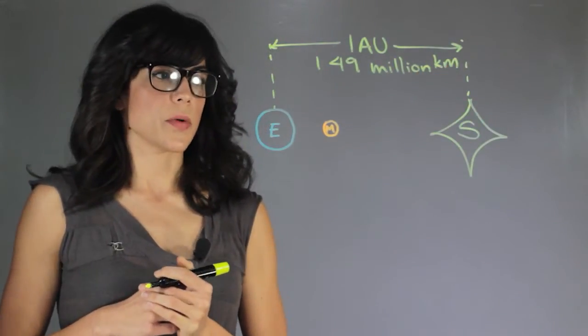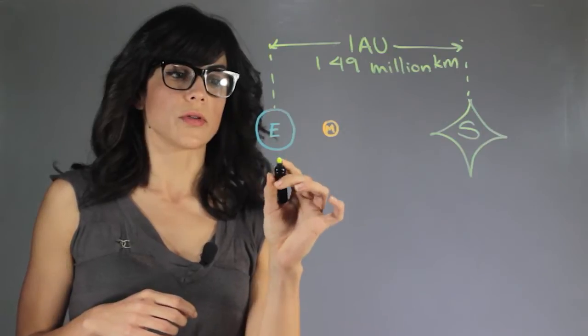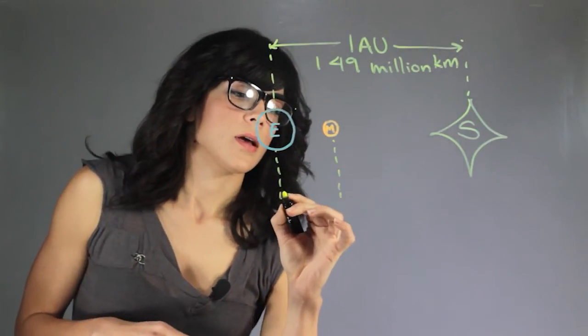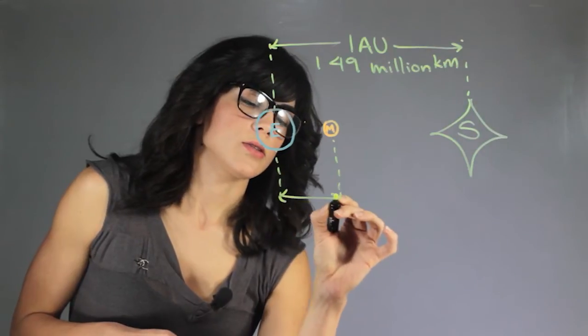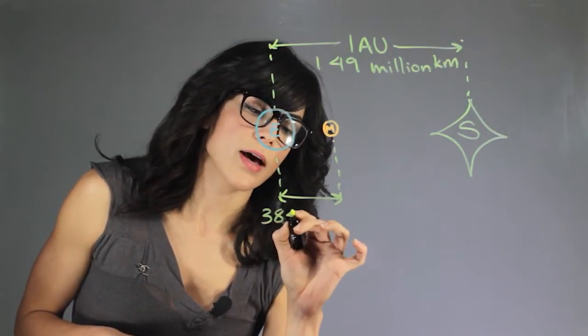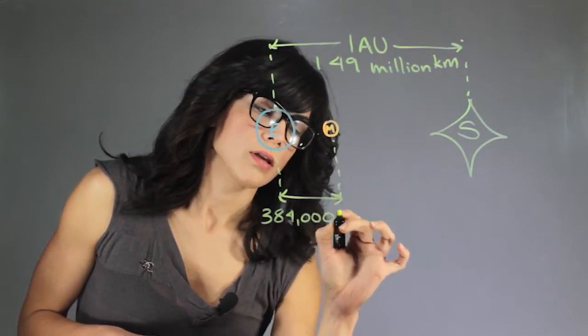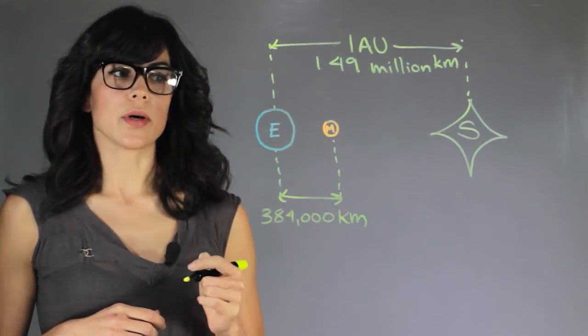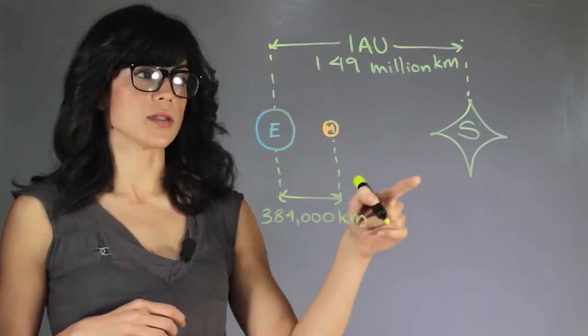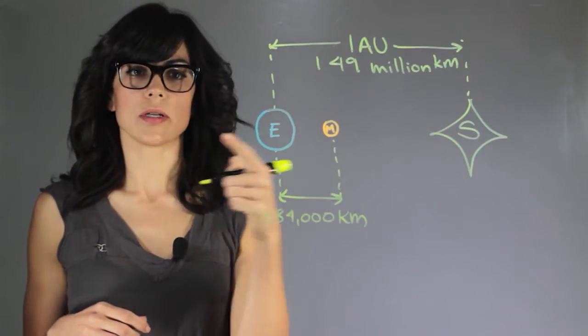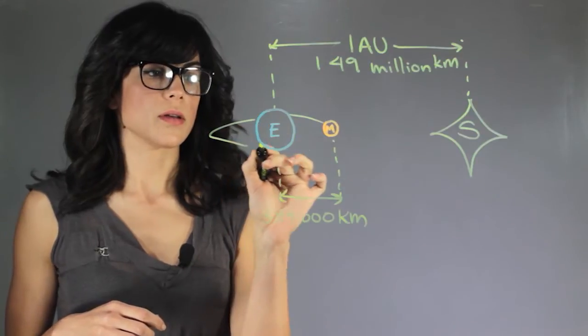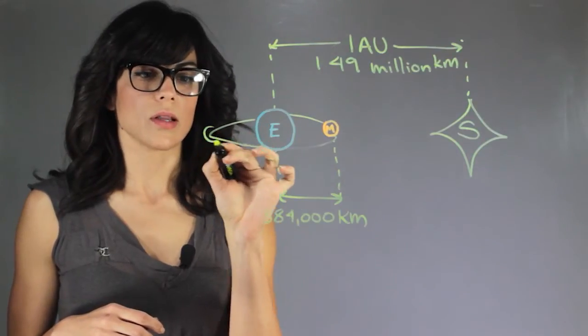Now the other distance that we want to know is the distance from the Earth to the Moon and this distance is 384,000 kilometers. And then the last distance that we need to know is the distance of the Moon to the Sun but because the Moon is also orbiting us it fluctuates so when it's at this point of the orbit it's a little further away.